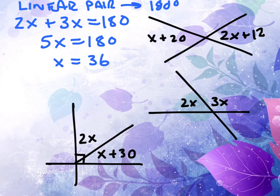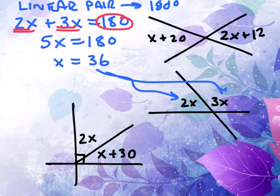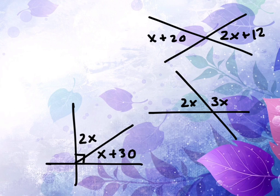Then again we would take that and plug it in. So that would be a 72 there. And then that would be 3 times 36 for its value as well. So notice in this case we set them equal to 180. We did not set them equal to each other. Very important distinguishing factor.